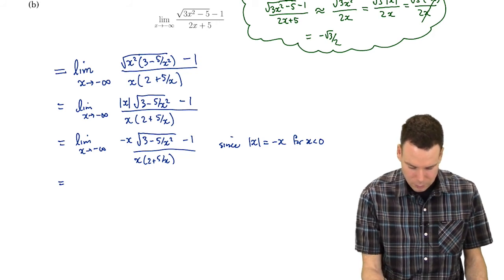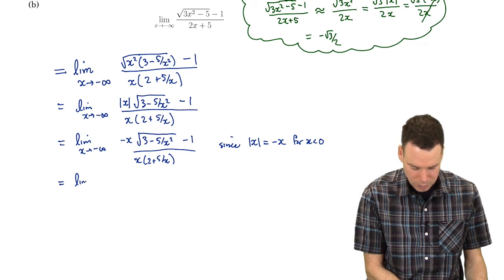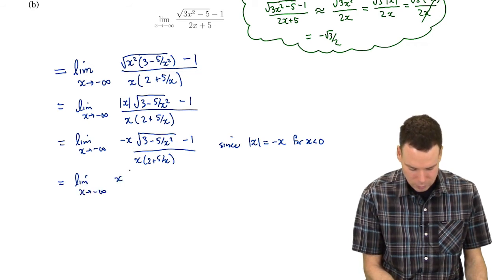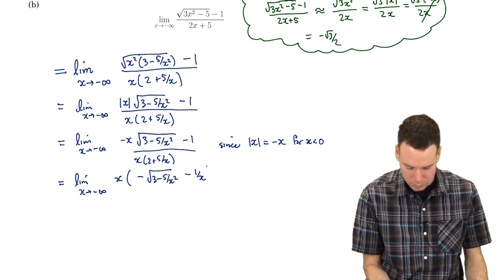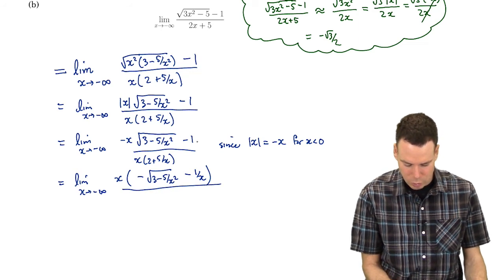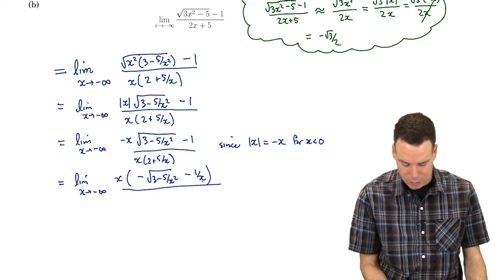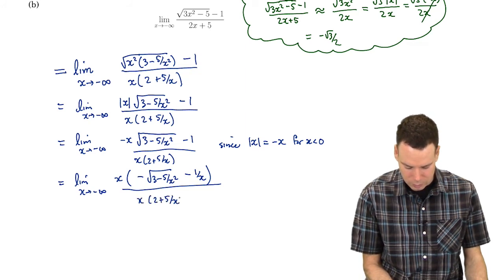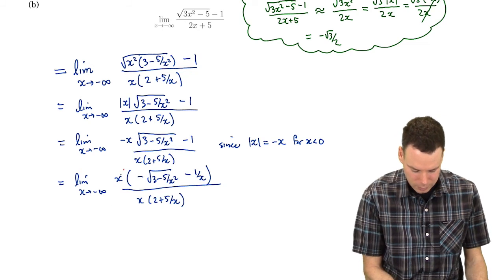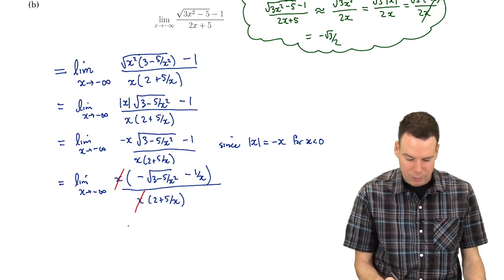Now I can cancel off the x's, oh almost, I can cancel off the x's once I factor it out of both pieces in the top. So I factor out an x, I get a negative square root of 3 minus 5 over x squared minus 1 over x. So I'm factoring the x out of both pieces in the top, that pushes an x into the denominator of that 1. I've got x and 2 plus 5 over x. Now I cancel those and now I look at the limit.